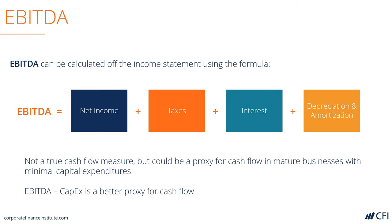At the end of the day, EBITDA is not a cash flow metric, but it is used frequently in valuation, as it can be a proxy for cash flow in a mature business with minimum capex, and it makes for easy comparability between companies. Deducting capital expenditures from EBITDA is a bit of a better proxy for normalized cash flow. But there can be a huge difference between EBITDA and cash flow. It's important to start with EBITDA, though, since it's so heavily used in finance.